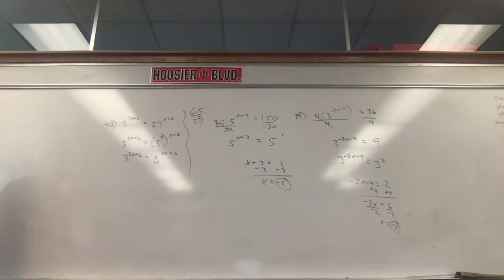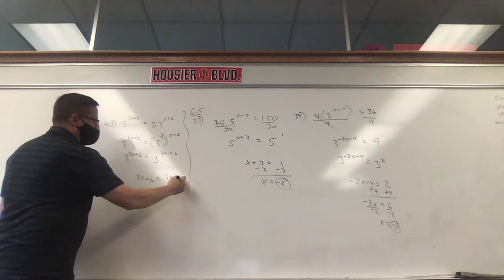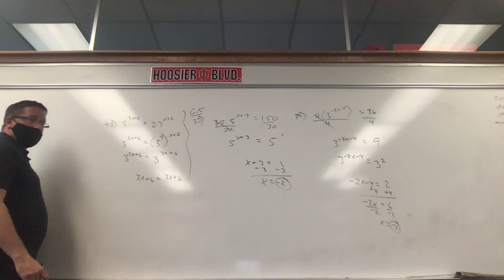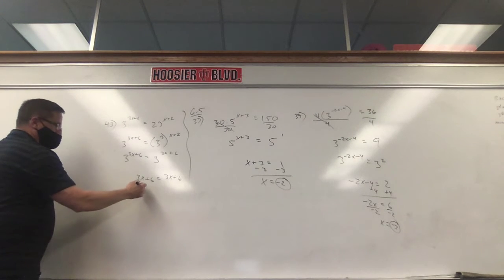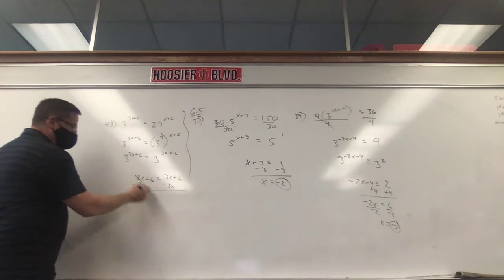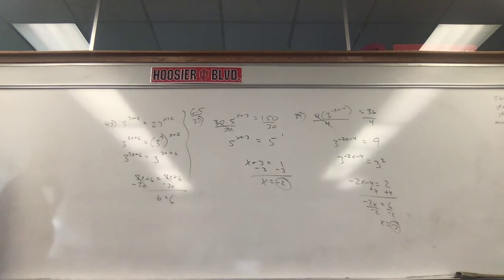So our bases are the same. Thank you. You're welcome. And so we're going to set our exponents equal to each other. So 3X plus 6 has to equal 3X plus 6. Well, we have an X on each side. We get rid of the smaller one. In this case, they're the same, so it doesn't matter which one we get rid of. If I do that, I'm not going to get X by itself. The X's are gone. So we're left with 6 equals 6. When is 6 equal to 6? Always. Always. So you know what the solution is? It's an infinite number of solutions. No matter what you plug in for X, everything's going to work. There's an infinite number of solutions.